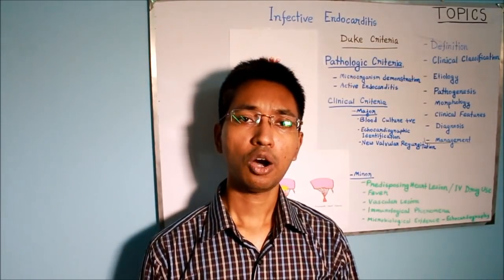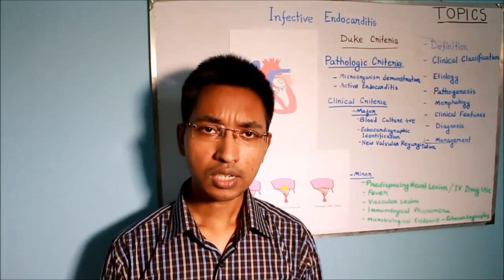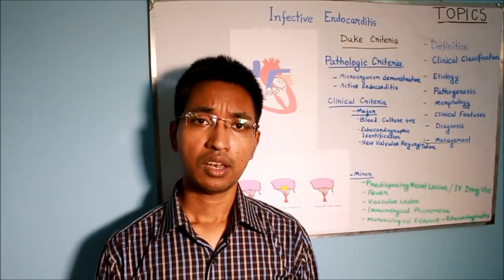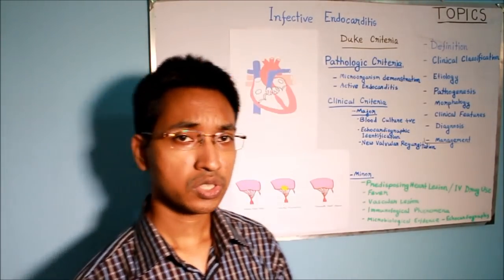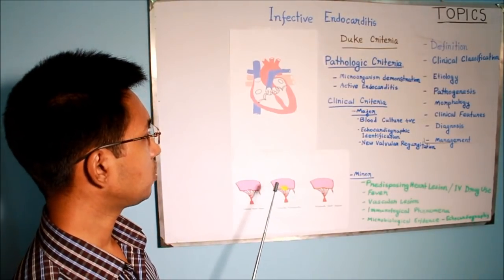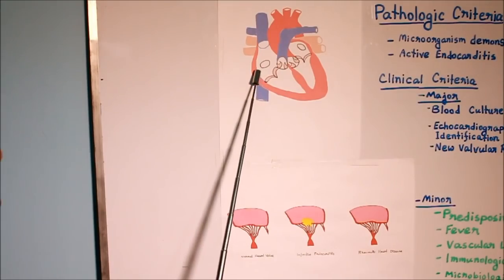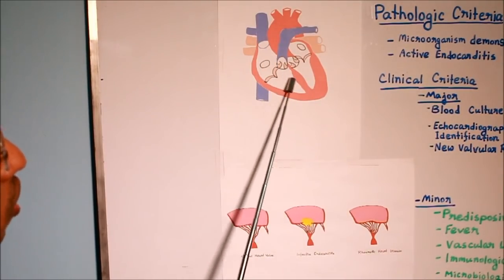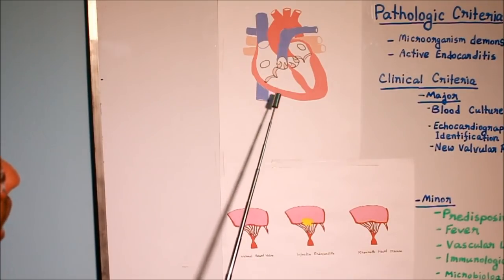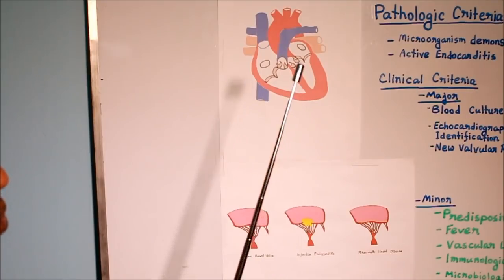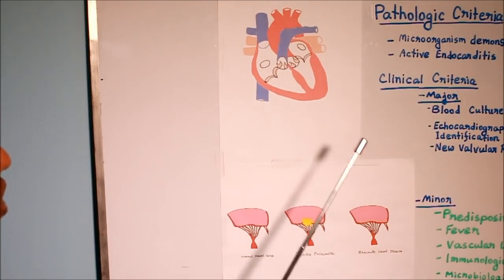So the literal meaning of endocarditis is inflammation of the endocardium. Recall that endocardium is a thin serous lining that covers the interior of our heart. As you can see in this image, here I have drawn a very diagrammatic cross-section of a heart. We can see the right atrium, right ventricle, and between them is the tricuspid valve, which helps in unidirectional flow of blood.